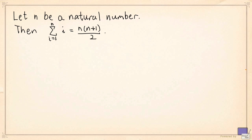We'll prove this in three different ways. The first is a simple direct proof. Basically, we start with the premise — in this case, the premise is that n is a natural number. From this, we logically deduce the conclusion, namely that the sum of the first n natural numbers equals n times n plus 1 divided by 2.